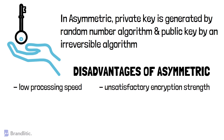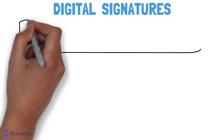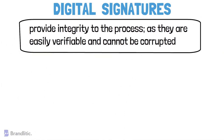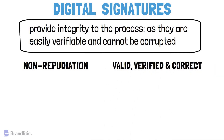One of the major parts of asymmetric key cryptography is digital signatures. Digital signatures provide integrity to the process as they are easily verifiable and cannot be corrupted. They also hold the quality of non-repudiation, making them similar to signatures in the real world. It is these digital signatures which ensure that the blockchain is valid and the data is verified and correct.